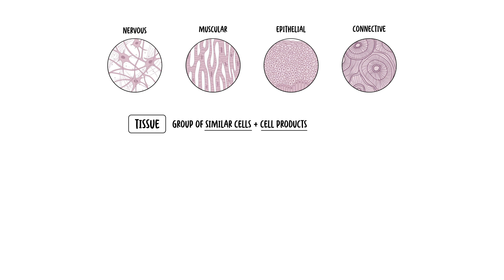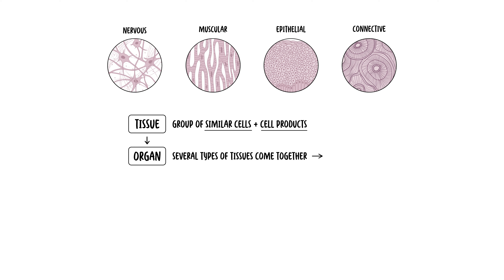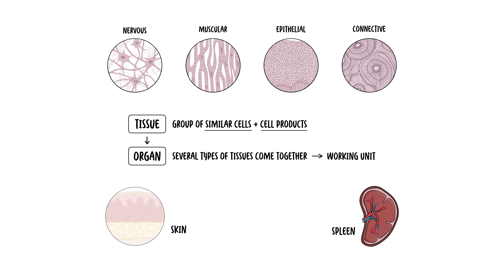The next level of organization after tissue is your organs, where several types of tissue come together to form a working unit. Two or more tissue types make up an organ, such as your spleen, your skin, and your heart.